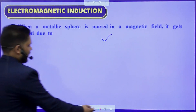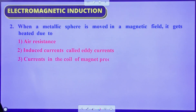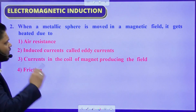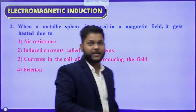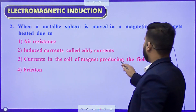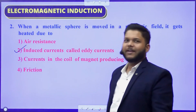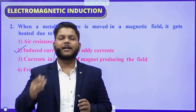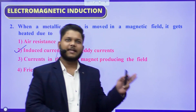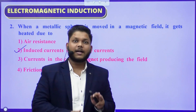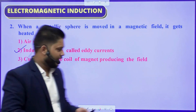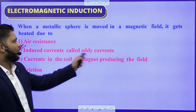Question number 2: When a metallic sphere is moved in a magnetic field, it gets heated due to — air resistance, induced current called eddy current, current in the coil of magnet producing the field, or friction. The answer here is eddy current. Whenever there is a conductor in a changing magnetic field, there is a magnetic flux change, so induced EMF is induced and then induced current is induced. That current is so large in magnitude that the substance can become red-hot. The correct answer is B — induced currents called eddy current.